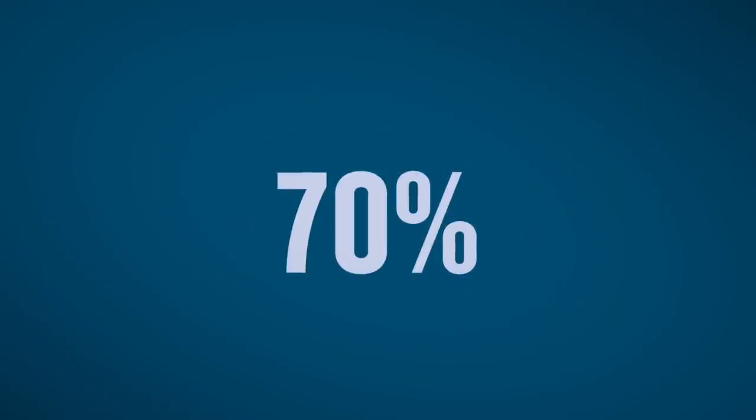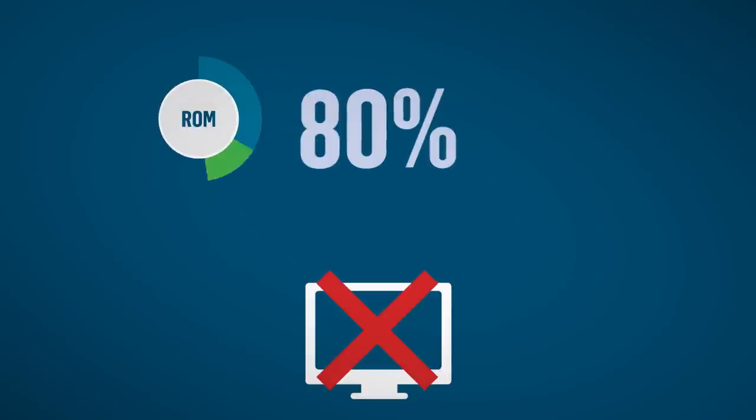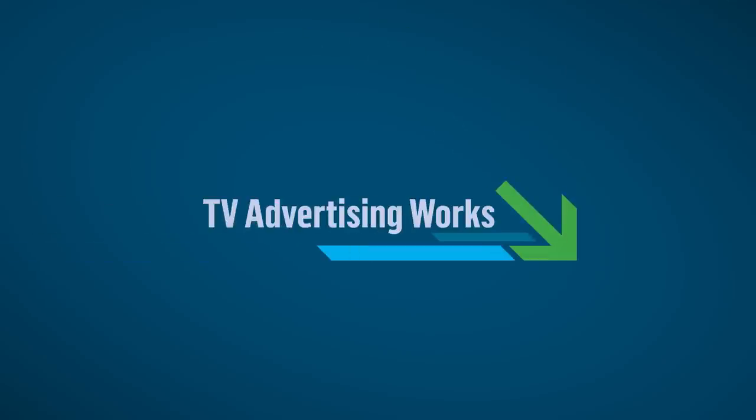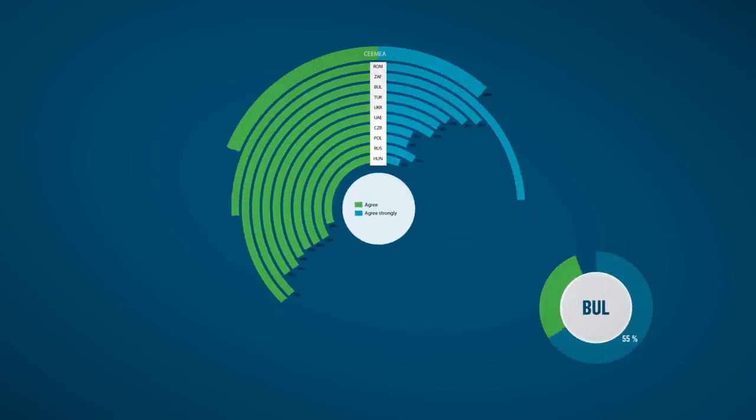When it comes to advertising, over 70% of viewers agree that TV quality would be compromised without it. In Romania and South Africa, that number goes up to 80%. Furthermore, TV ads are still very effective. Half of the viewers admitted to looking up products or services online after watching ads. In Bulgaria, that number is as high as 70%.